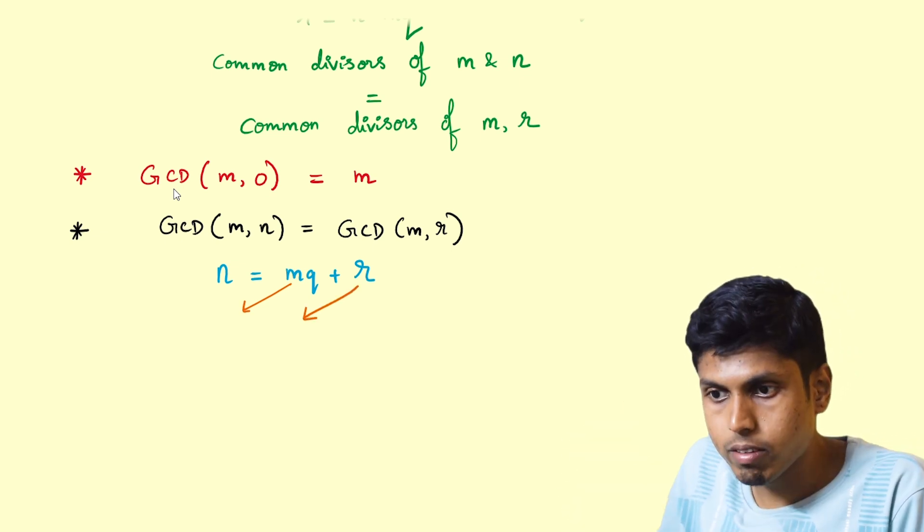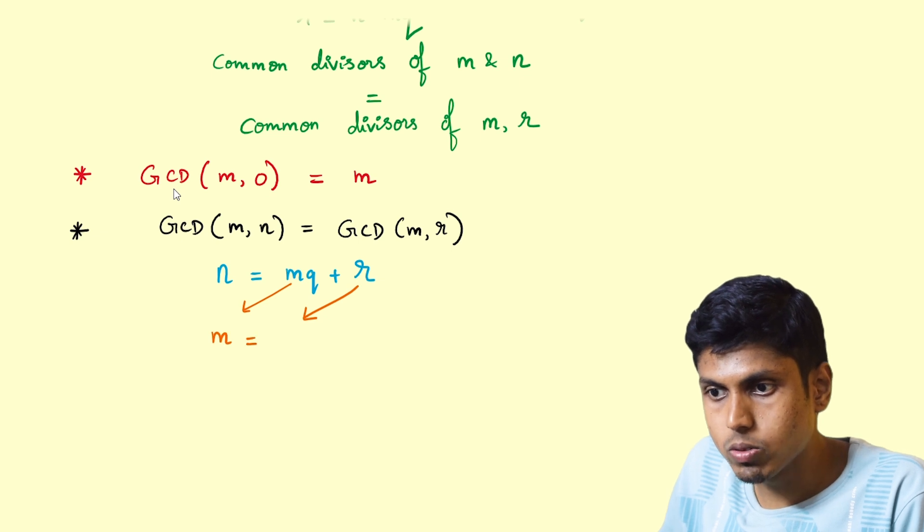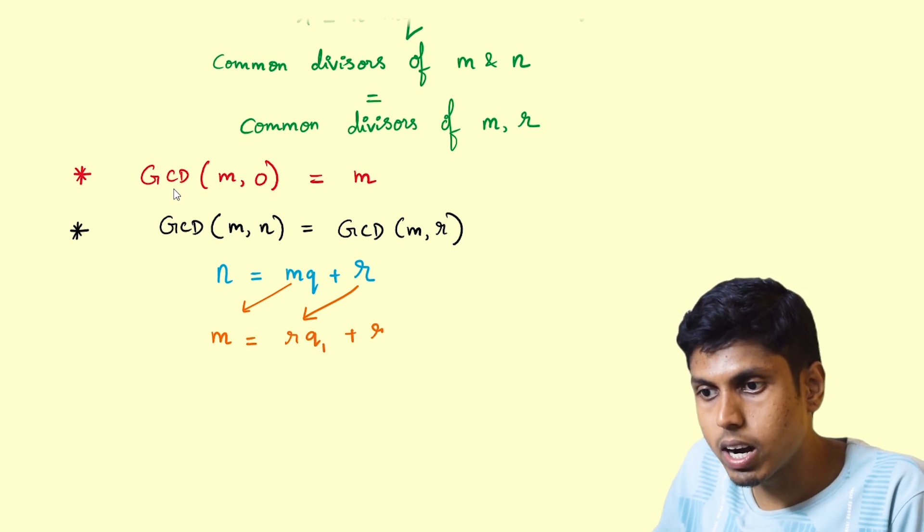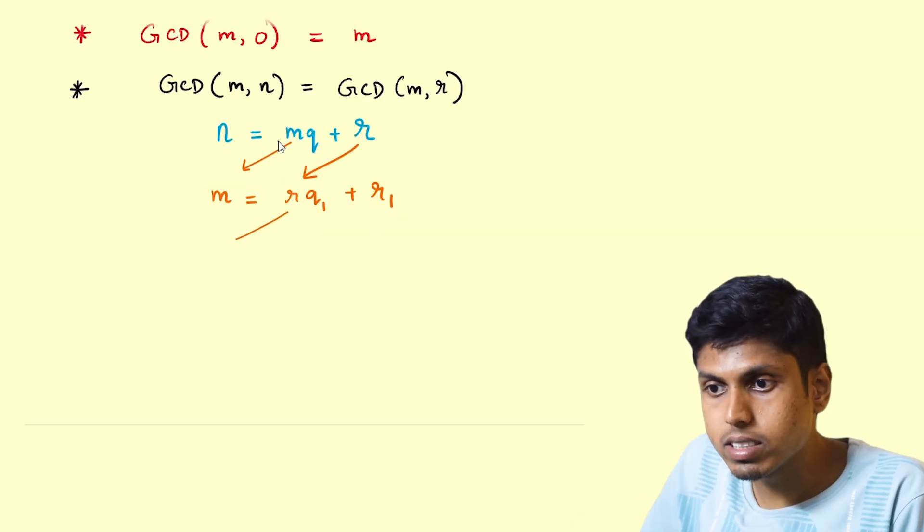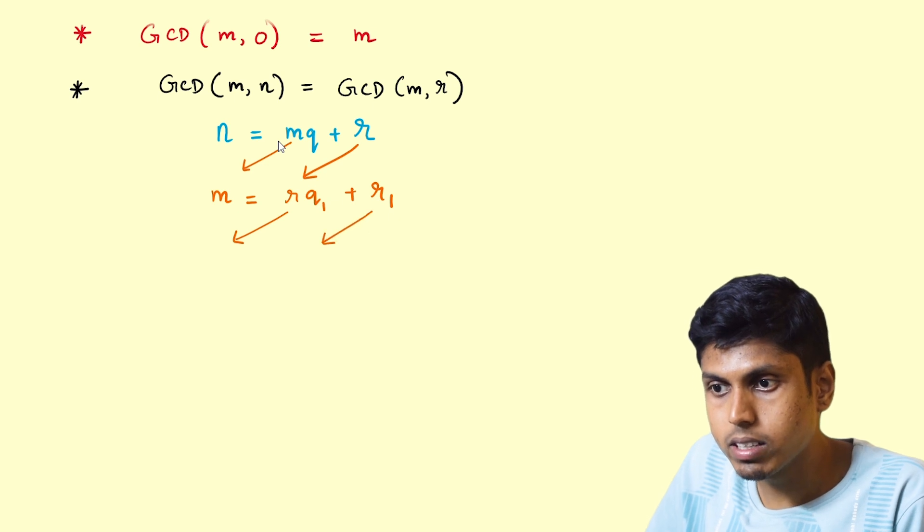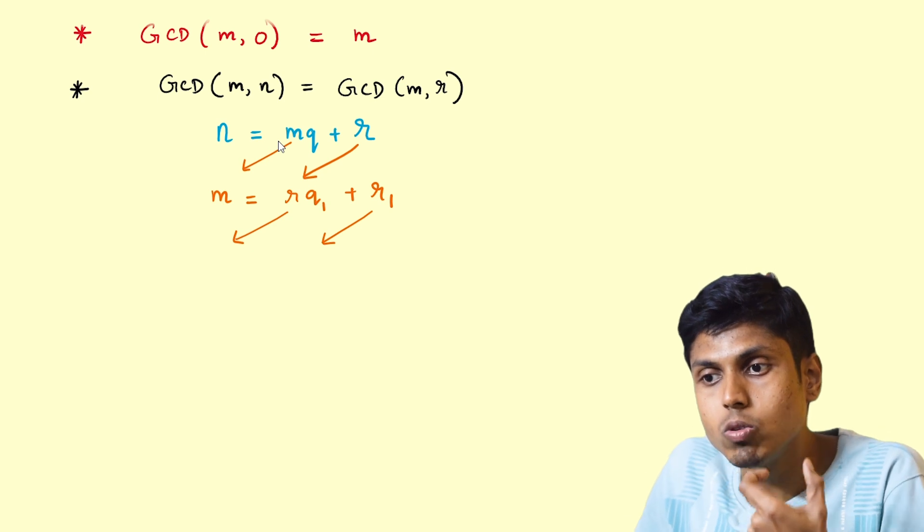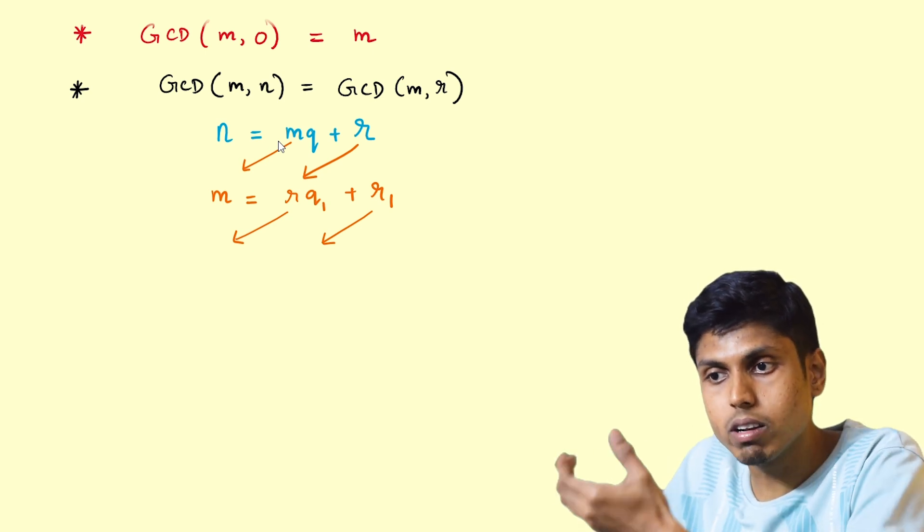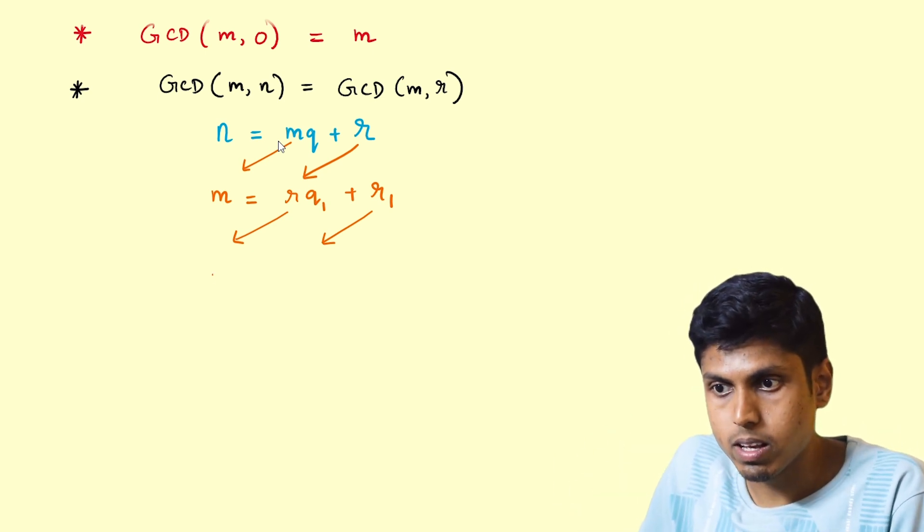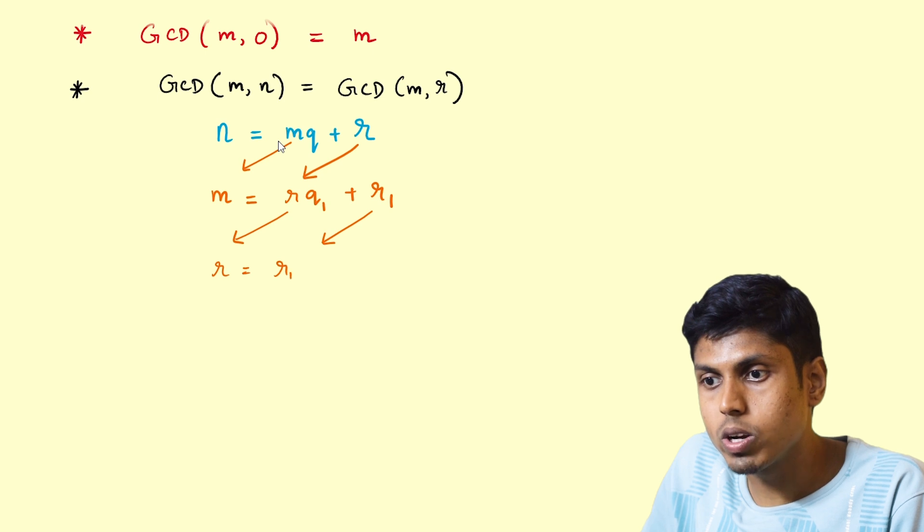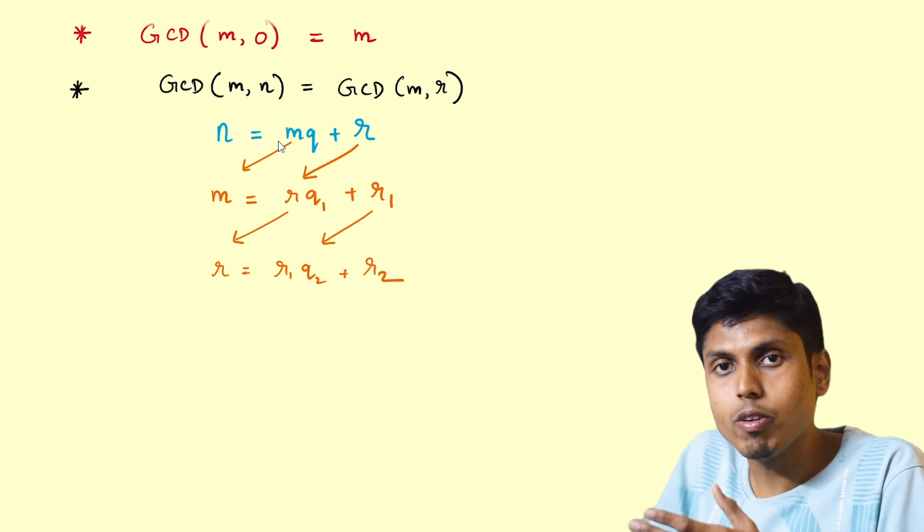So considering the divisor and remainder, I'll perform the division algorithm again and we will be getting m equals rq1 plus r1. And again take the divisor and the remainder and perform the division algorithm. That is, the old divisor will be our new dividend and old remainder will be our new divisor. So r equals r1 q2 plus r2.